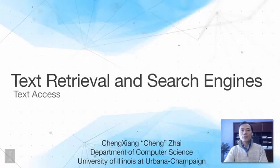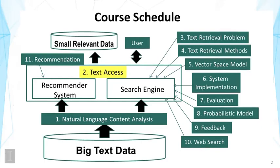In this lecture, we're going to talk about text access. In the previous lecture, we talked about natural language content analysis. We explained that the state-of-the-art natural language processing techniques are still not good enough to process a lot of unrestricted text data in a robust manner. As a result, bag-of-words representation remains very popular in applications like search engines. In this lecture, we're going to talk about some high-level strategies to help users get access to the text data. This is also an important step to convert raw, big text data into small relevant data that are actually needed in a specific application.